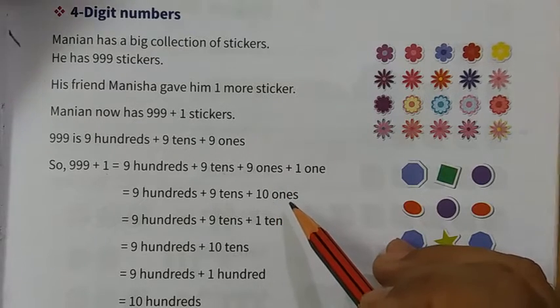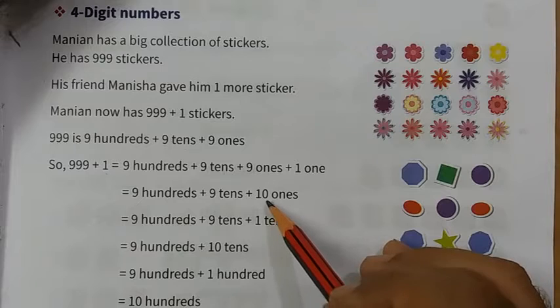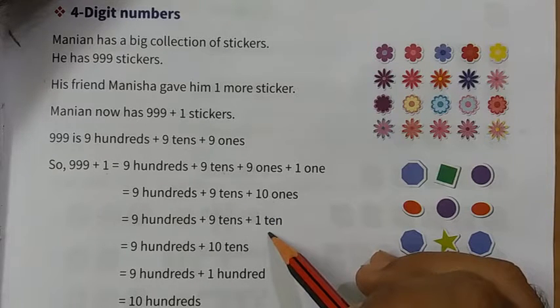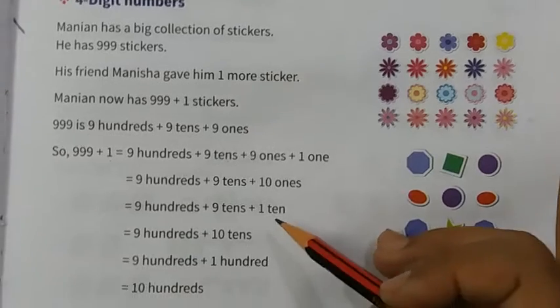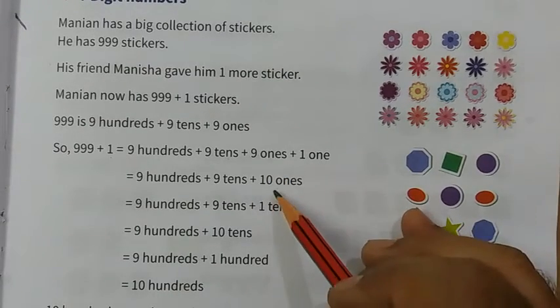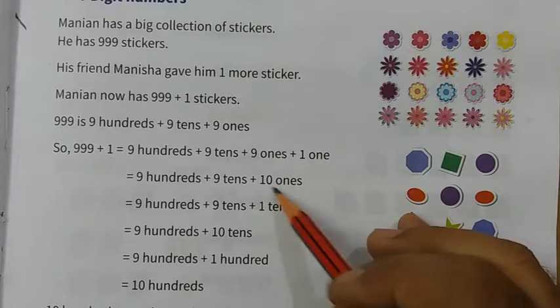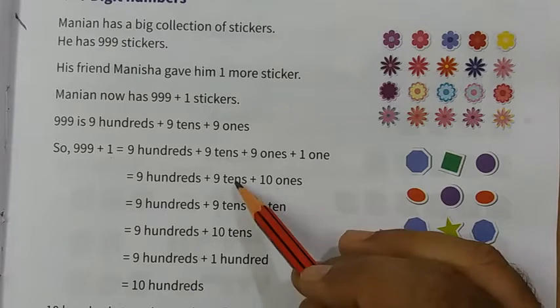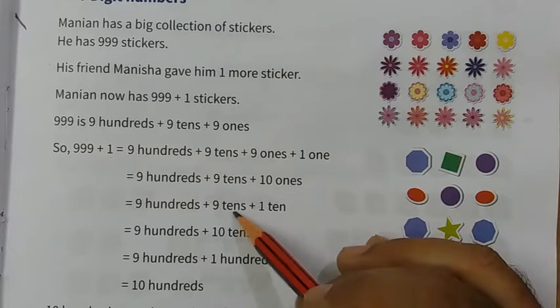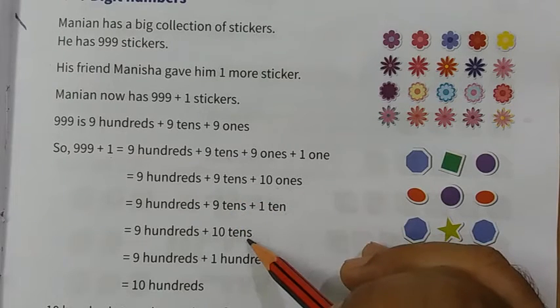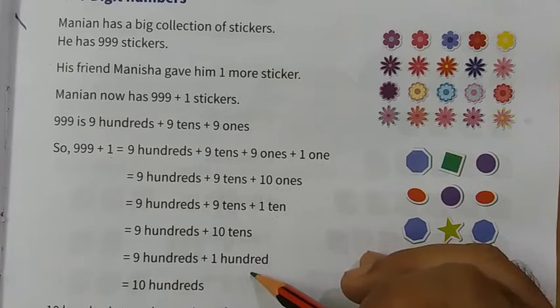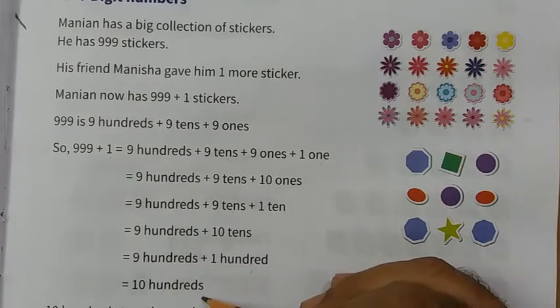We know that in previous video we have already discussed that 10 ones means 1 ten. Now 9 tens plus 1 ten, 9 tens and 1 ten is equal to 10 tens. Now 10 tens means 1 hundred.